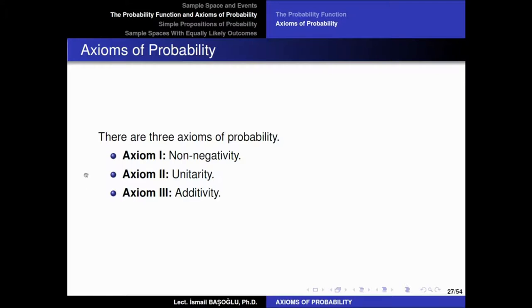So these three axioms — Axiom 1, 2, and 3 — are the axioms that we certainly need to believe in so we can make further calculations on probability. These axioms are called the non-negativity, unitarity, and the additivity axioms.